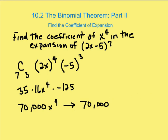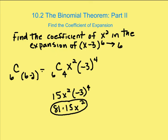Now let's revisit the prior problem to confirm our answer in terms of the coefficient. It's going to be 81 times 15, which is going to be 1215. That's your coefficient — the coefficient of expansion for x squared. And your term will be 1215x squared.